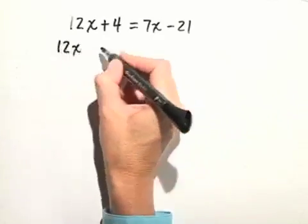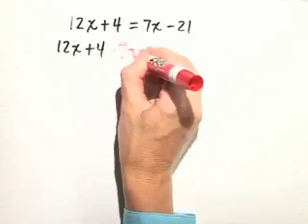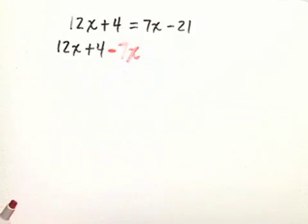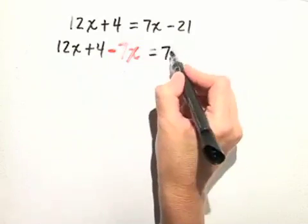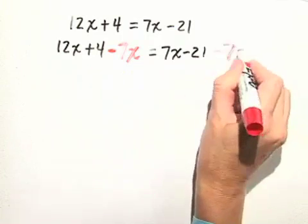So we have 12x plus 4 minus 7x equals 7x minus 21, and again minus 7x.